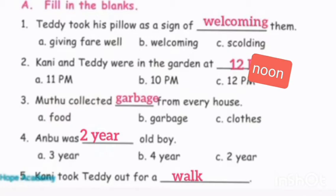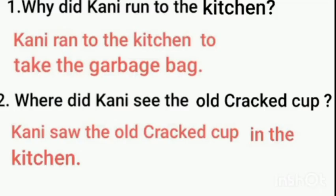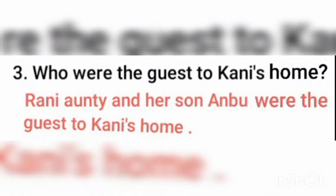Answer the following. First one: Why did Canny run to the kitchen? Canny ran to the kitchen to take the garbage bag. Second one: Where did Canny see the old cracked cup? Canny saw the old cracked cup in the kitchen. Third: Who were the guests to Canny's home? Ronnie Auntie and her son Anbu were the guests to Canny's home.